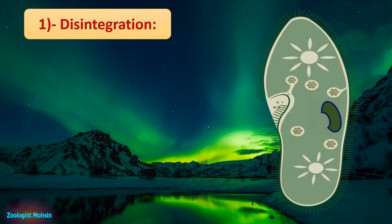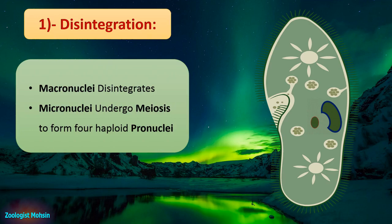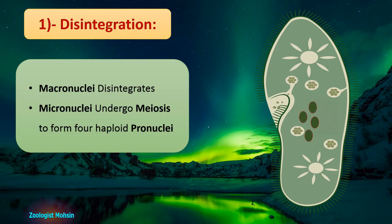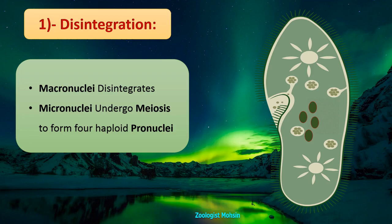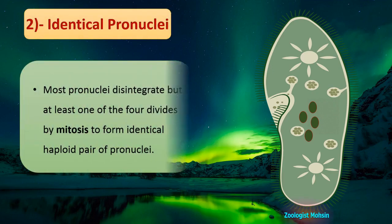The first step is disintegration of macronuclei. The macronuclei degenerate and disappear, while micronuclei undergo meiosis to form haploid pronuclei — at least 4, but more if micronuclei are numerous. If a cell has 80 micronuclei, a correspondingly large number of haploid pronuclei would be produced, so it is necessary to eliminate the excessive number of pronuclei.